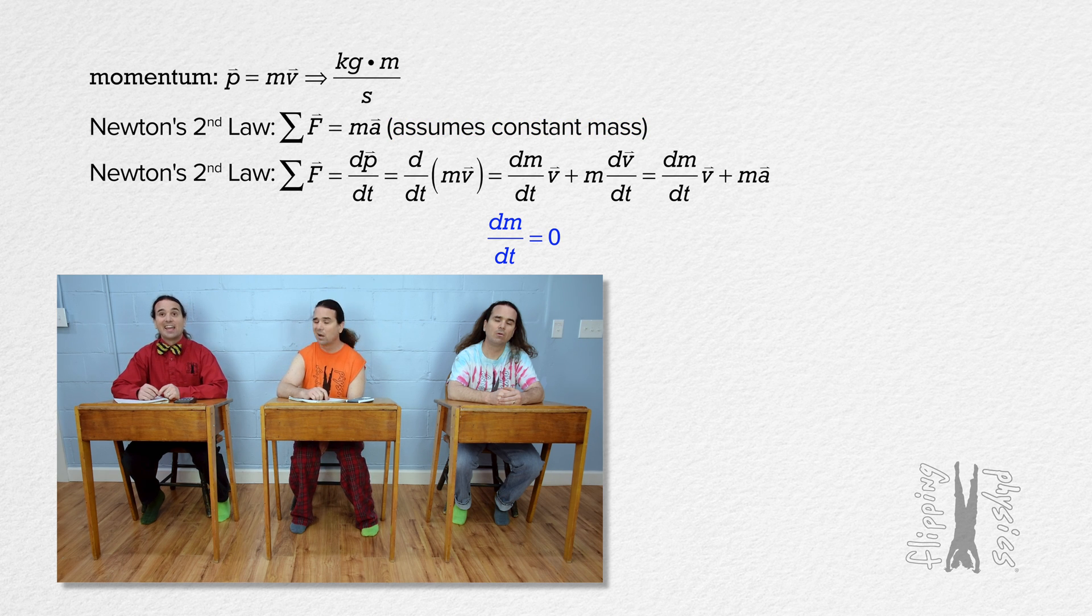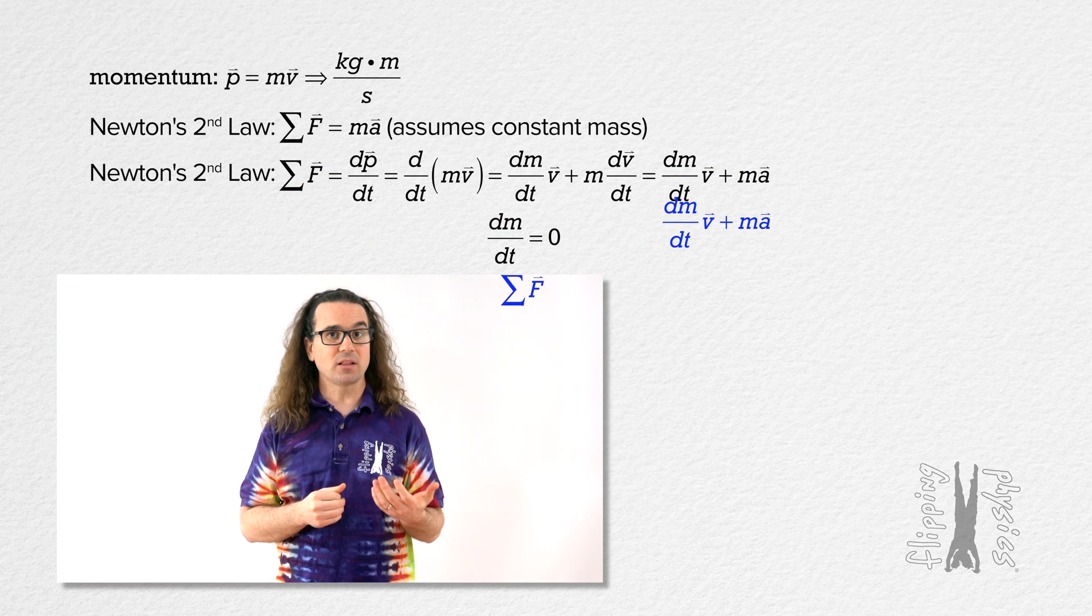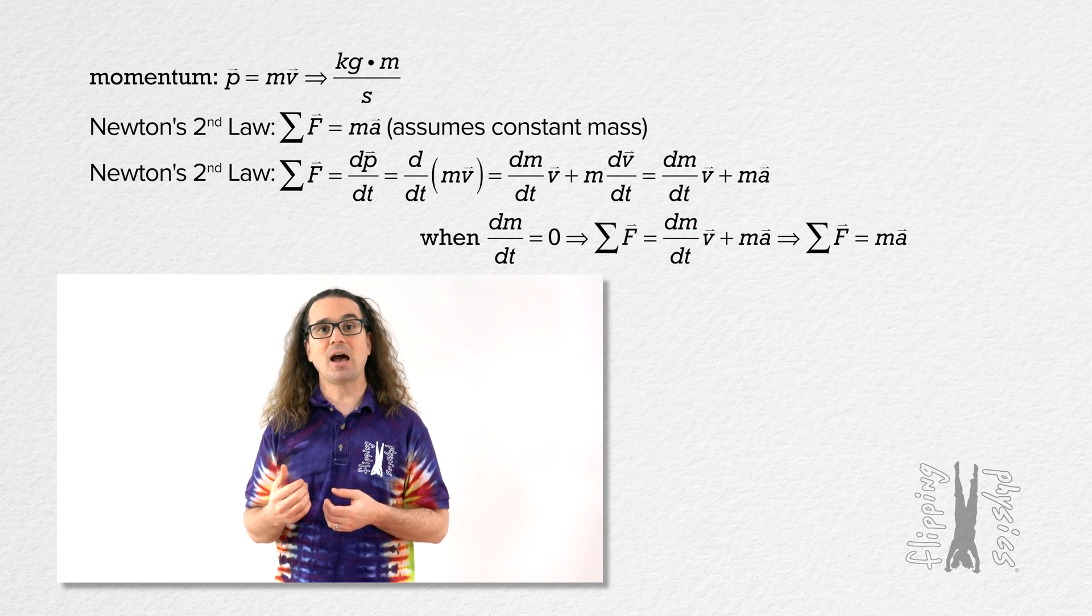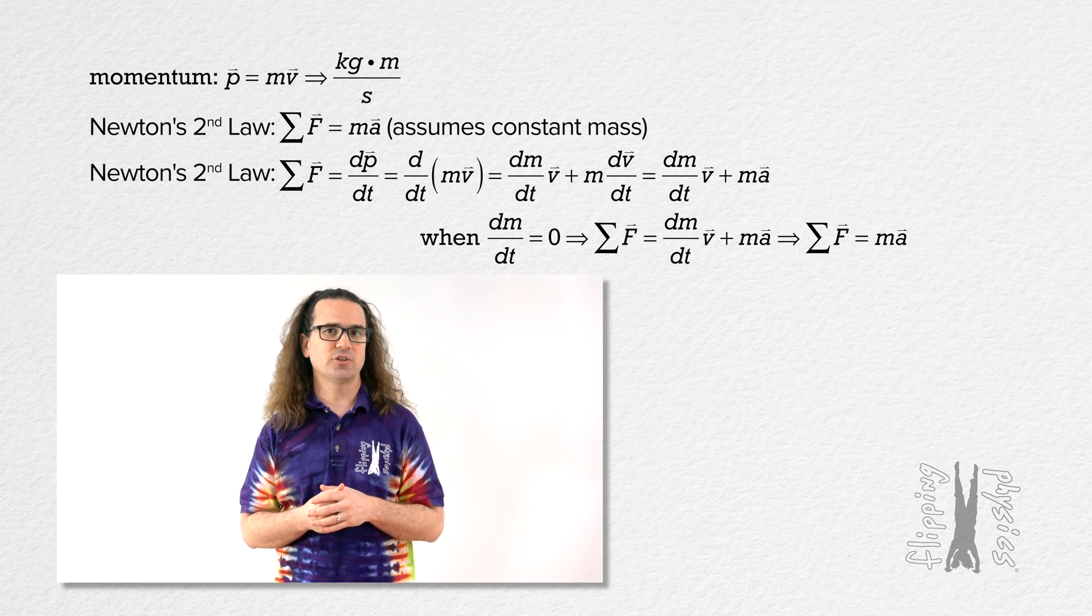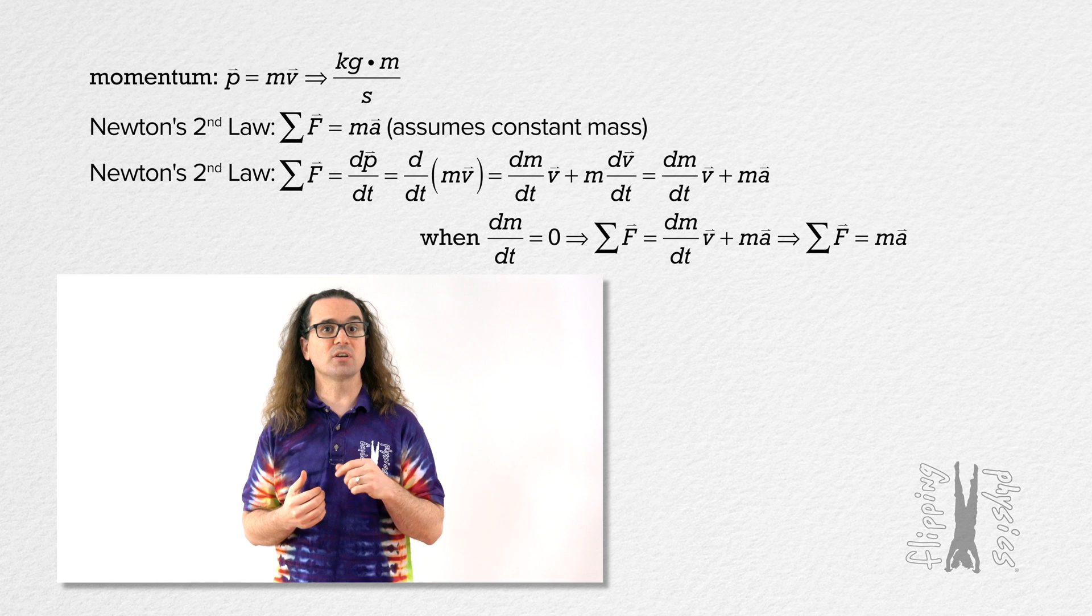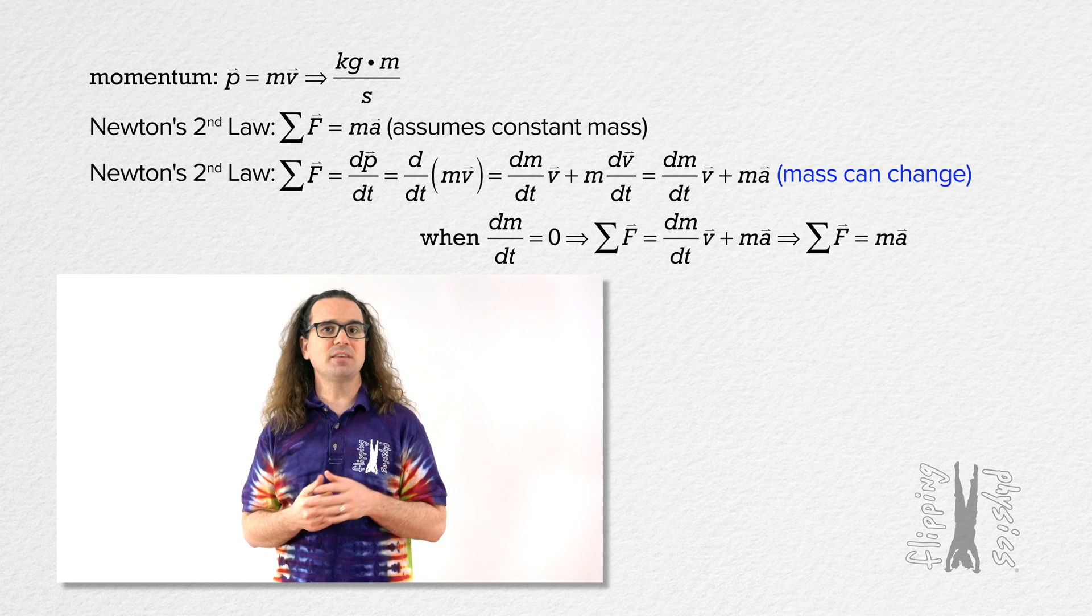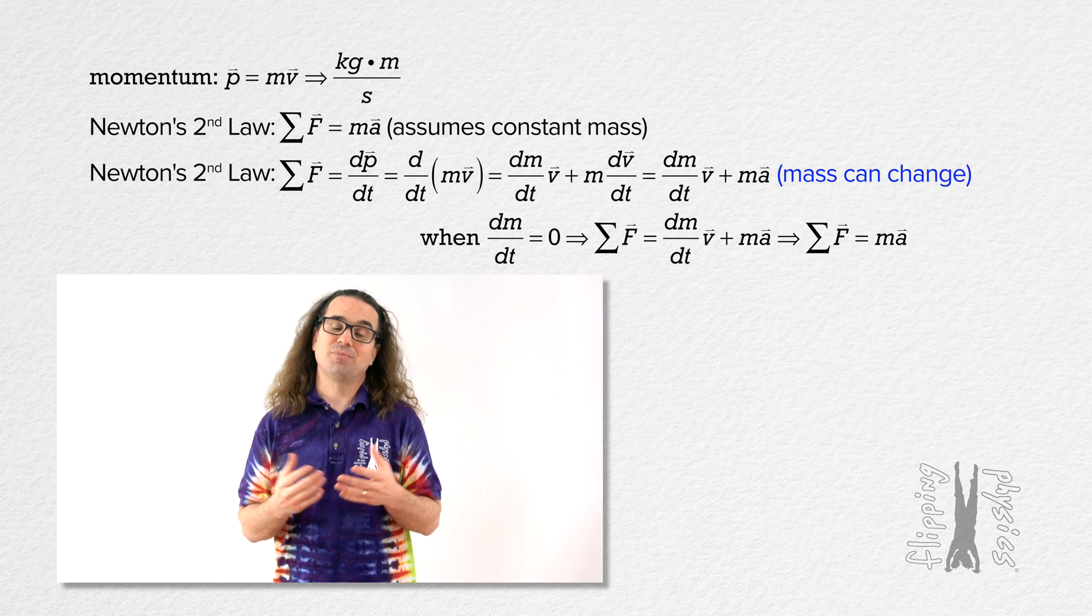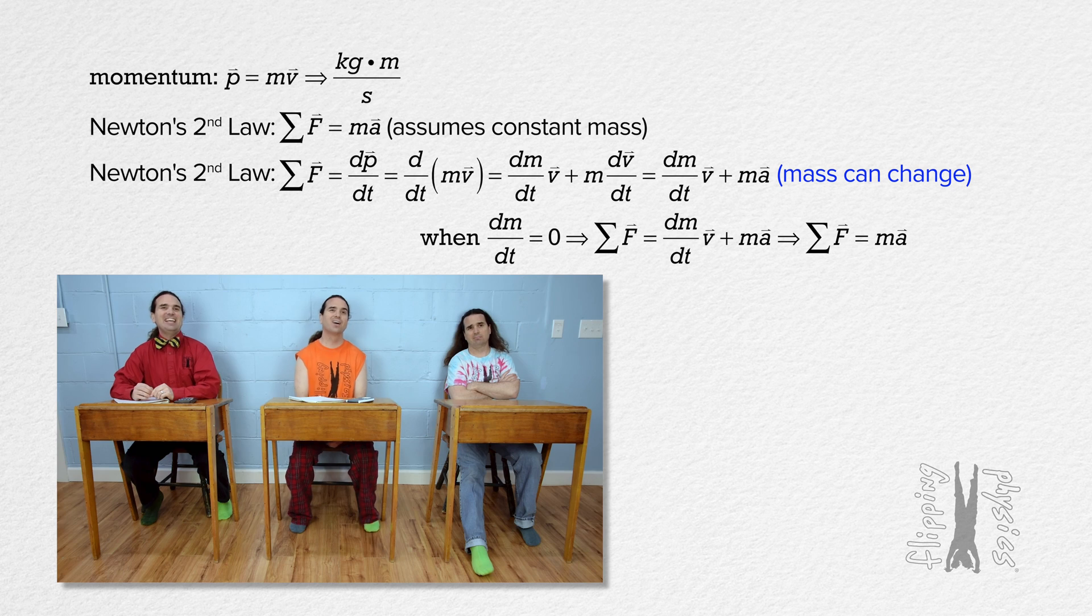Very nice y'all. Yes, the form of Newton's second law in terms of acceleration assumes the mass of the object or system does not change. Which means, using the new version of Newton's second law in terms of momentum, the mass of the object or system of objects can change. Think rockets.